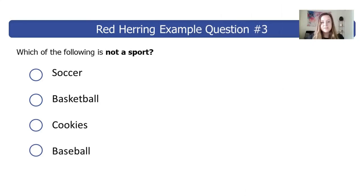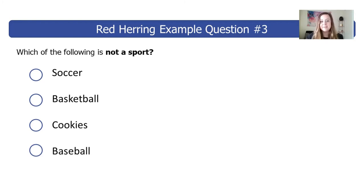An example of using outlier answers might look something like: which of the following is not a sport? A) soccer, B) basketball, C) cookies, D) baseball. If the respondent selects something other than cookies, they're clearly not paying attention. Using this type of red herring question can help minimize responses from those who are just trying to get to the end of the survey, perhaps for the reward or just to be done with it.